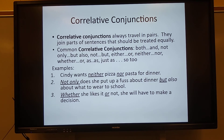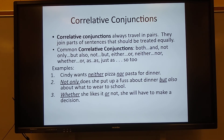For example, number one: Cindy wants neither pizza nor pasta for dinner. The correlative conjunctions are neither/nor — they travel in pairs, two each time. Number two: not only does she put up a fuss about dinner, but also about what to wear to school. There you have not only/but also — correlative conjunctions traveling in pairs.